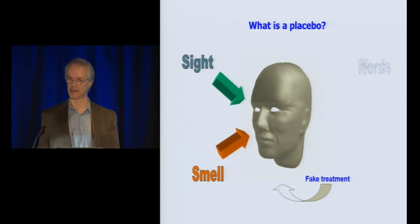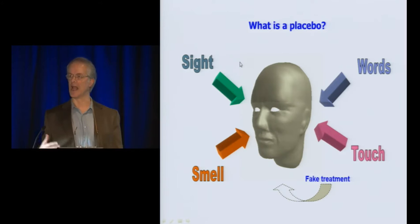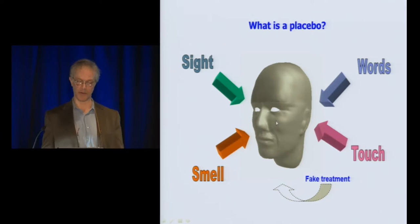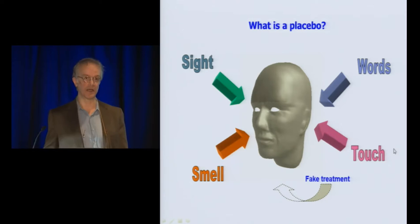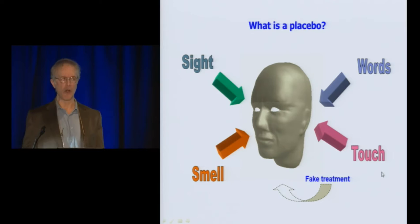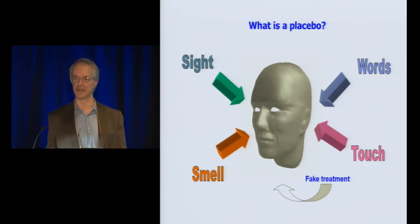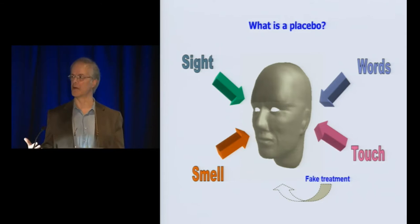A placebo is a fake treatment plus the psychosocial context around the patients and around the treatment. For example, the sight of health professionals, the hospital environment, the smell of drugs — these are all important. The words of health professionals — physicians, physiotherapists, psychologists — are very important. Being touched by complex machines like an ultrasound machine matters as well. All these sensory and social stimuli tell the patients that a therapy is in progress, so the patient expects a clinical improvement and therapeutic benefit.